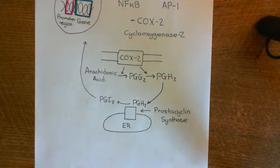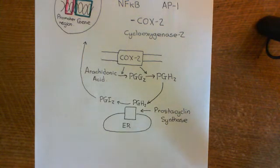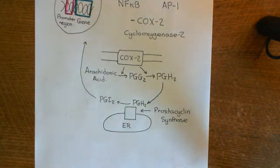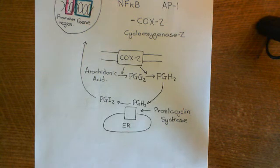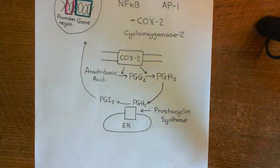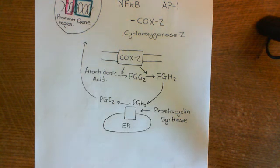This first part of type 2 activation — producing the COX-2 enzyme — is all about doing what type 1 activation does, but doing it better. Type 2 activation doesn't do that much that's entirely different from type 1; the main theme is doing the same things far more effectively. We're now producing prostacyclin much more efficiently than type 1 activated endothelial cells were doing.